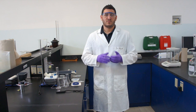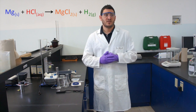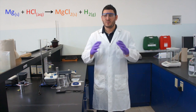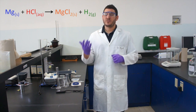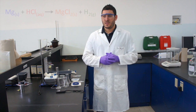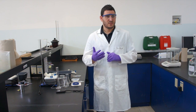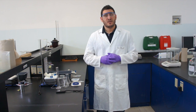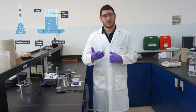Magnesium solid plus hydrochloric acid (aqueous) gives you MgCl2 remaining in solution, plus hydrogen gas. We will collect the hydrogen gas using the method of collecting gas over water, which was explained in chapter 5.